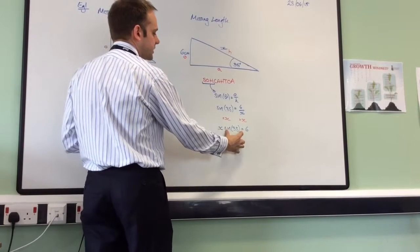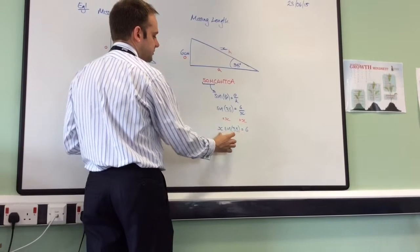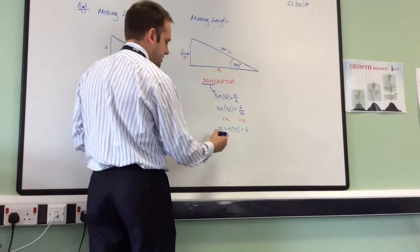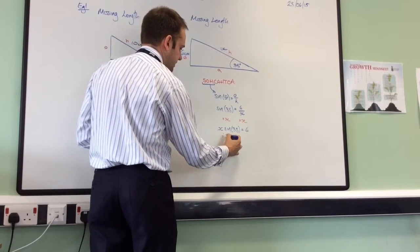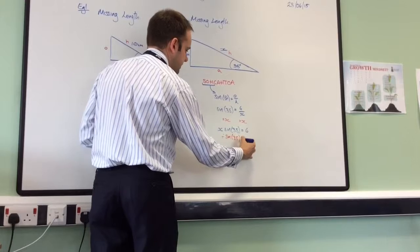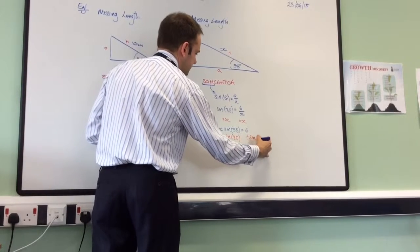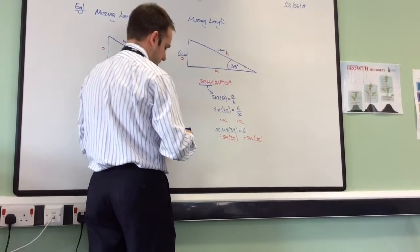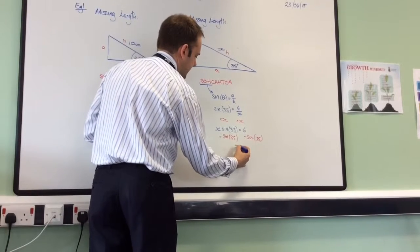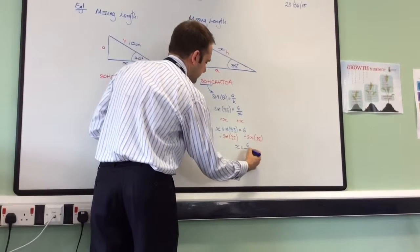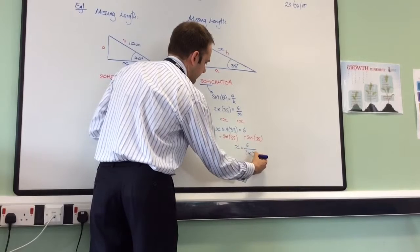But I want X on its own, and I need to get rid of this sine 35. It's multiplied by X, so the opposite is to divide by sine 35 on both sides. And now I've got something that I can type into my calculator. So X is equal to 6 divided by sine of 35.